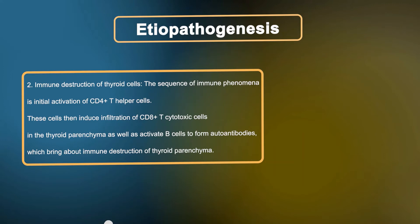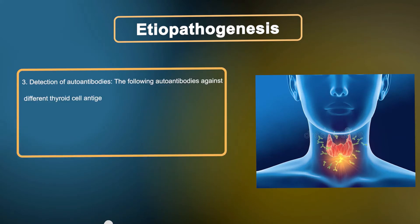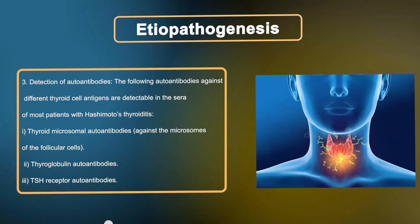Second, immune destruction of thyroid cells: the sequence of immune phenomena involves initial activation of CD4+ T helper cells. These cells then induce infiltration of CD8+ T cytotoxic cells in the thyroid parenchyma, as well as activate B cells to form autoantibodies, which bring about immune destruction of thyroid parenchyma.